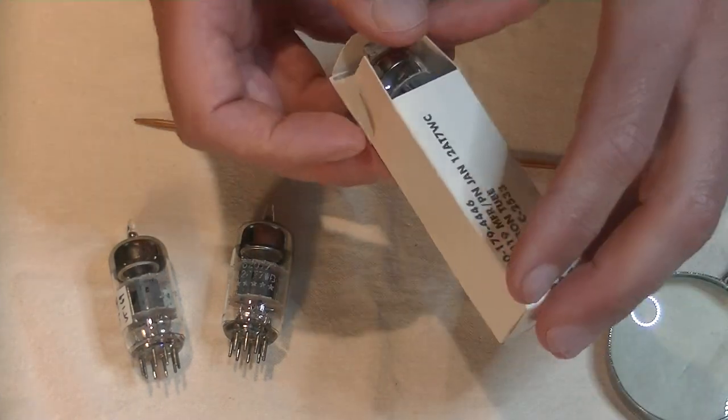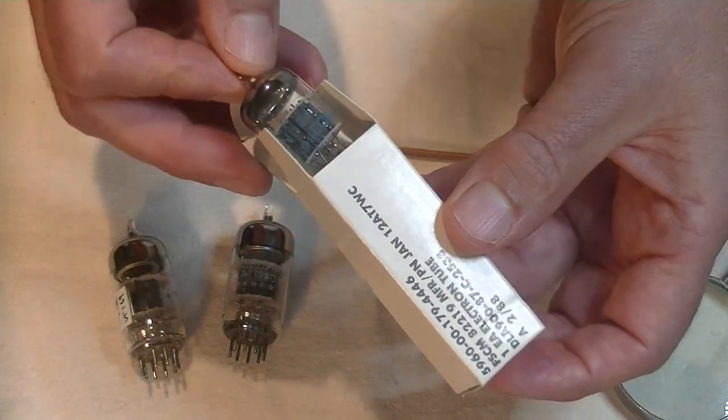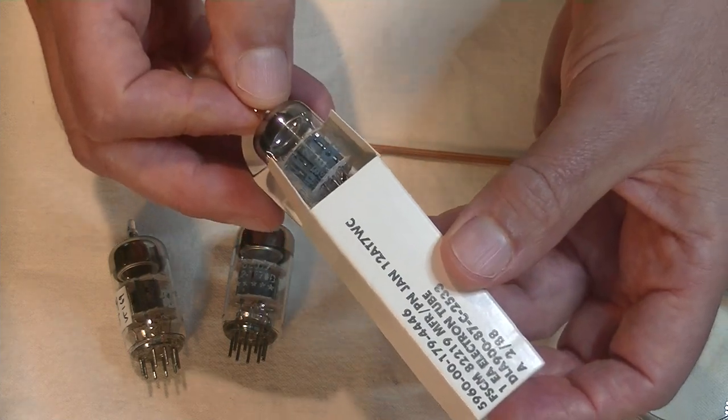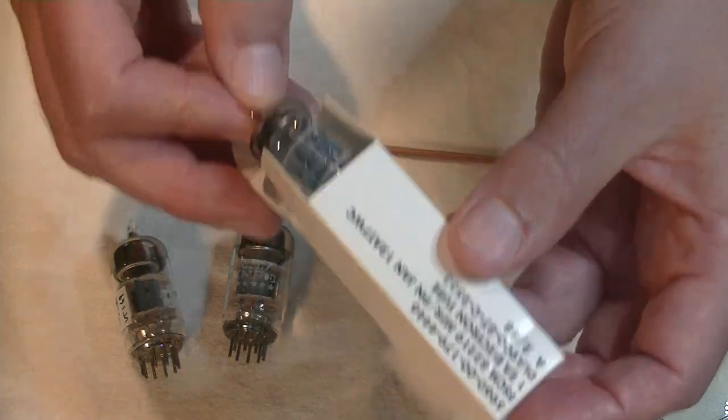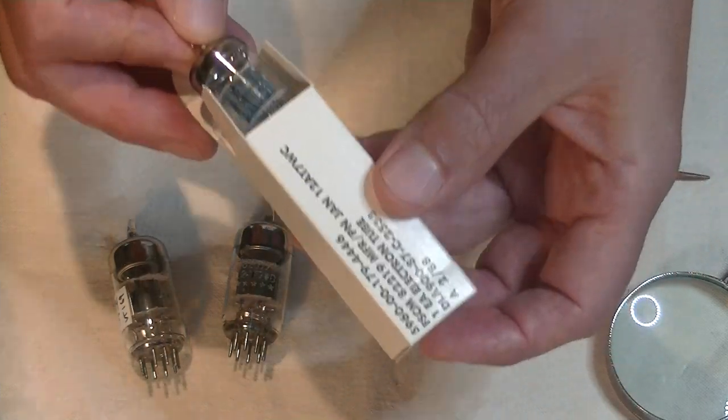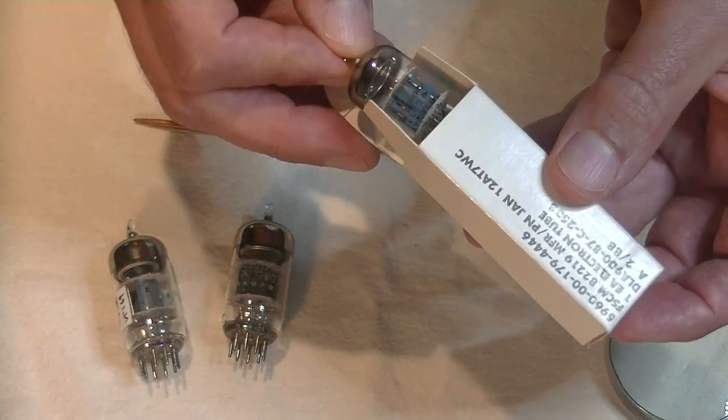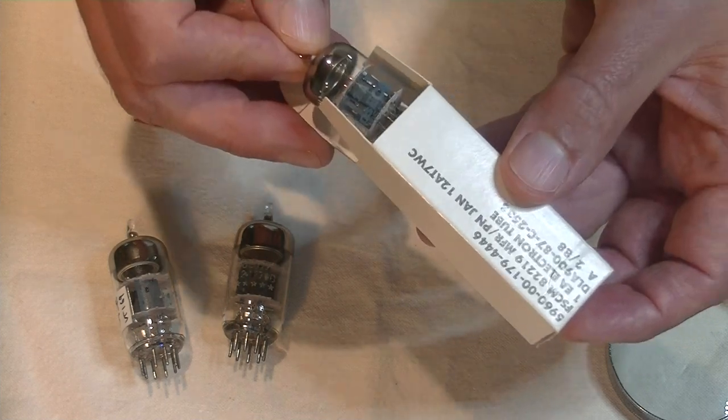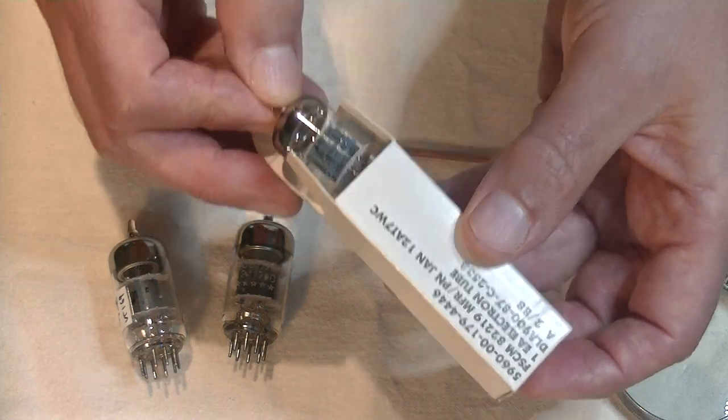Next is a JAN-12AT7, Philips Sylvania. JAN just means Joint Army-Navy, or mil-spec. This is an example of a quality tube that doesn't sub well in the 12AX7 slot. It is microphonic, and as a result, the noise floor is above acceptable.